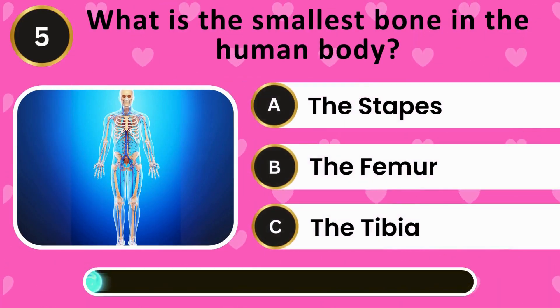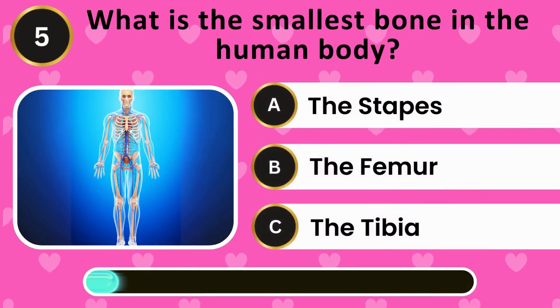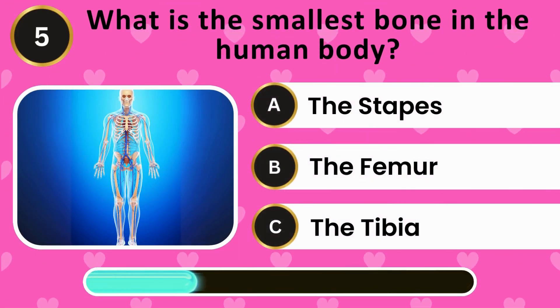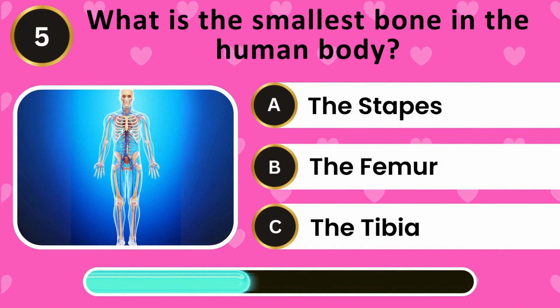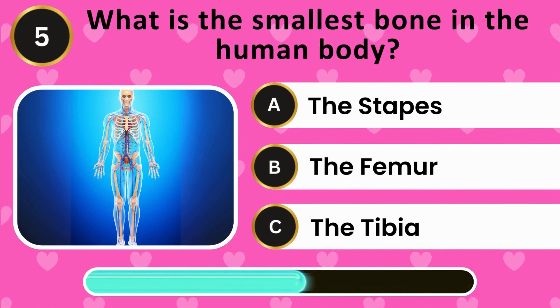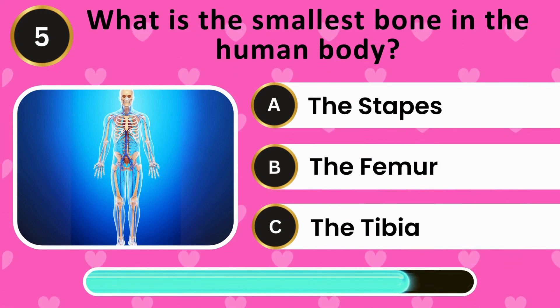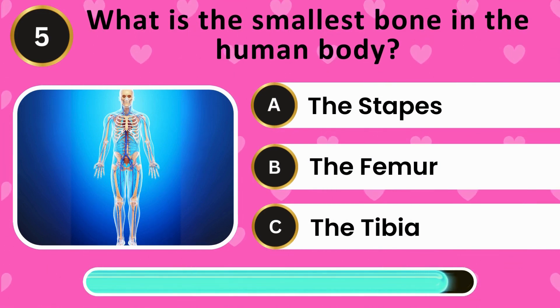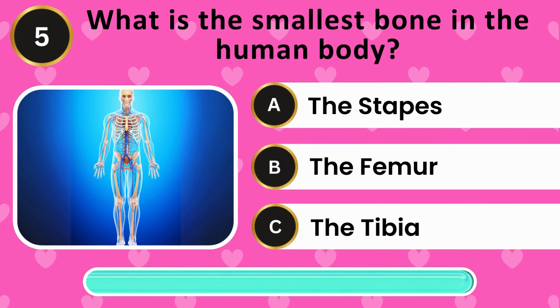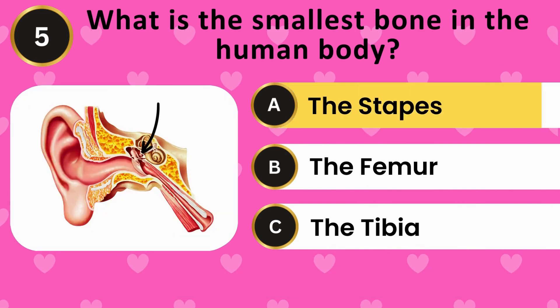What is the smallest bone in the human body? The stapes, the femur, the tibia. The answer is the stapes.